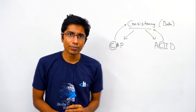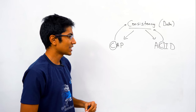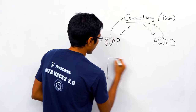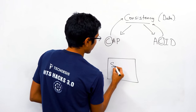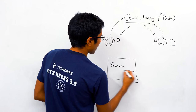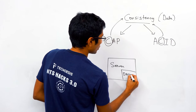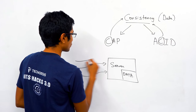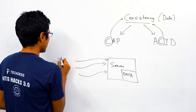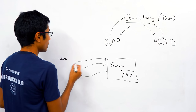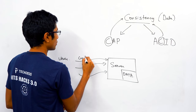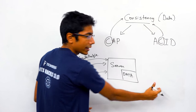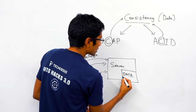Let's take a simple example — let's take Facebook in their initial days. We're on the Harvard campus with a single server and a single copy of data, which different students from all over campus connect to. If a user creates a profile, the database or file system — a single copy — stores that profile.